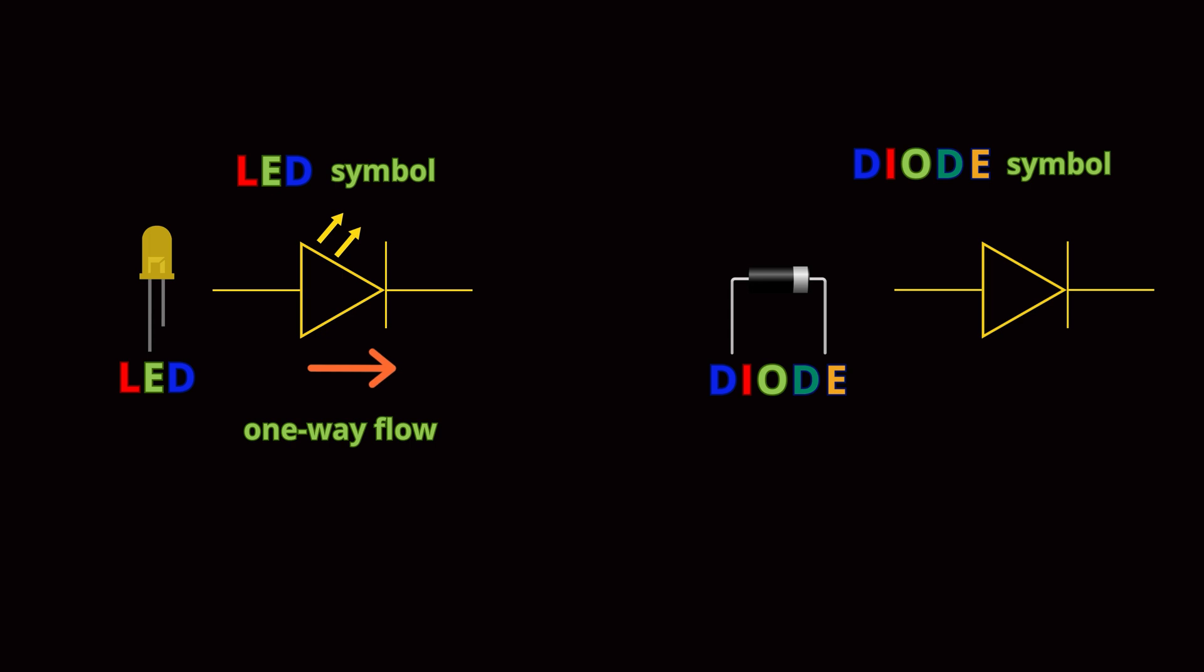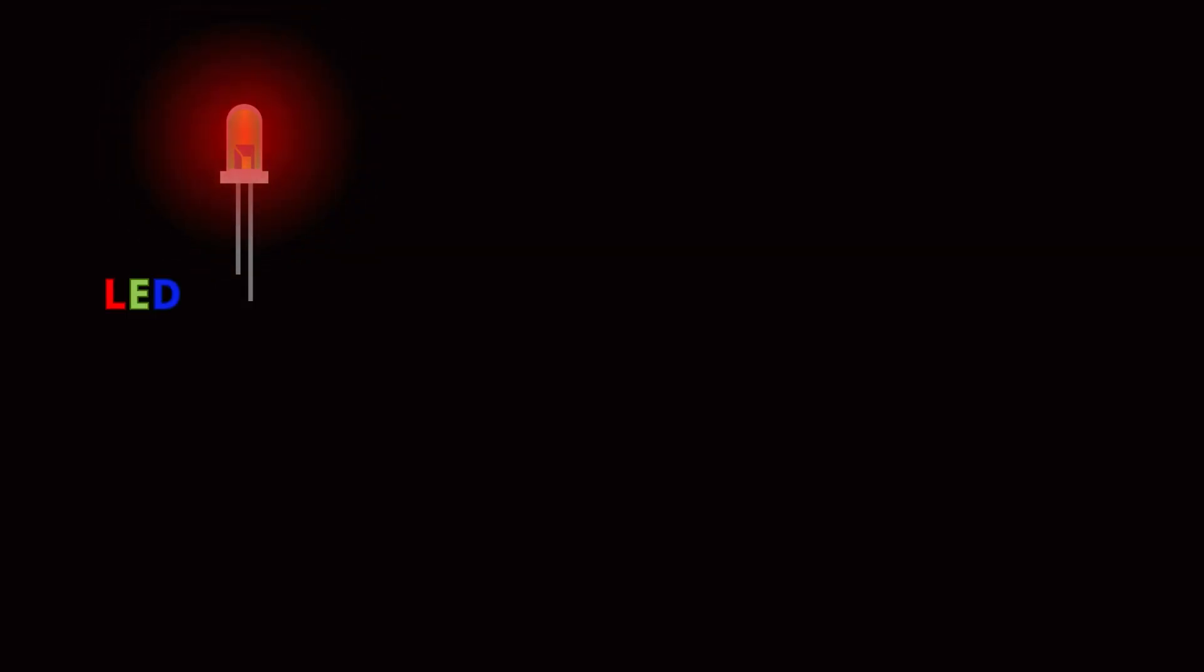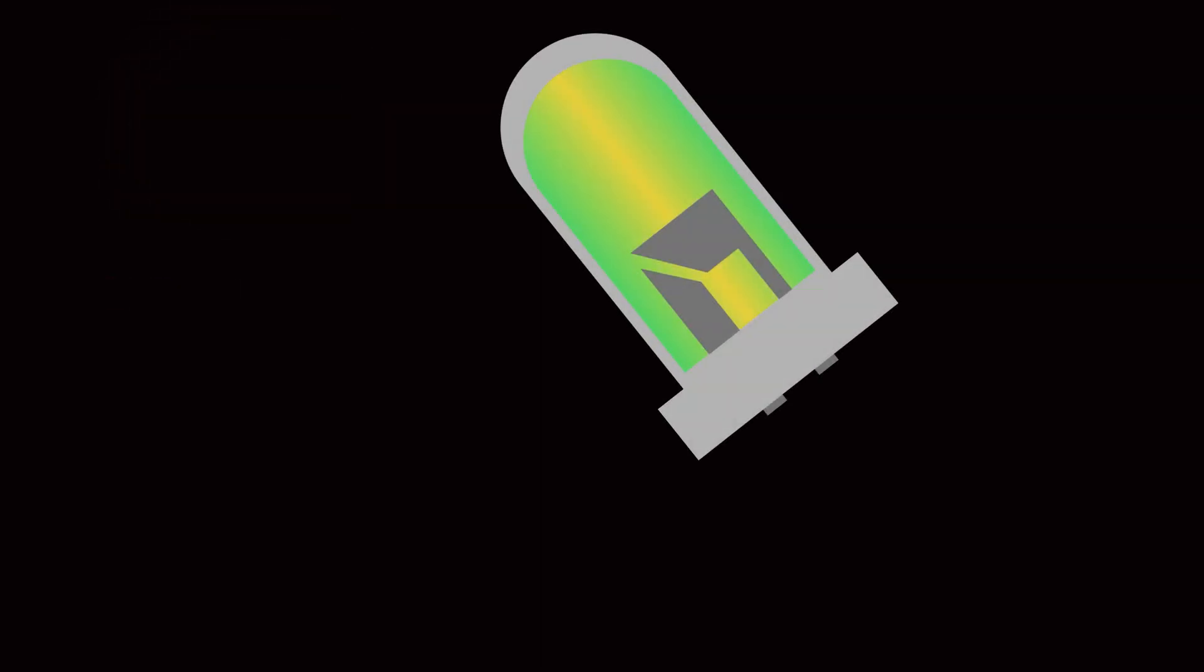This one-way flow of current is critical to the operation of an LED, which makes it a type of diode. The light emission happens because of how the materials inside the LED interact with electricity. To understand why LEDs produce light, we need to look inside the semiconductor material.